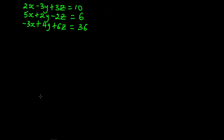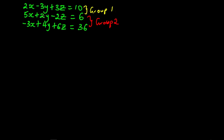To solve a system of linear equations with three variables, what we do is we group the three equations into two groups. We group the first and second equation into group one, and the second and third equation into group two.